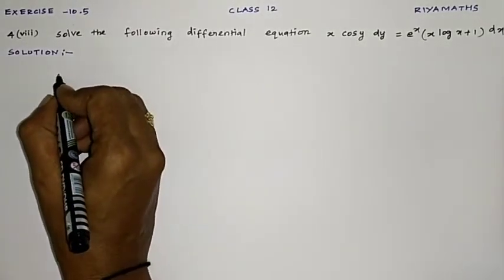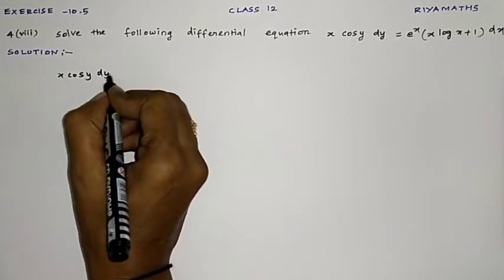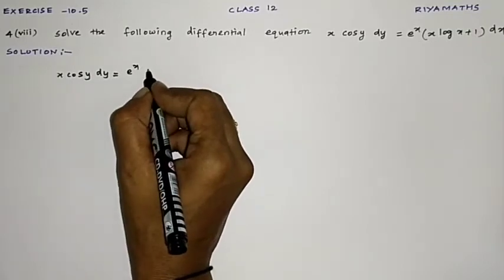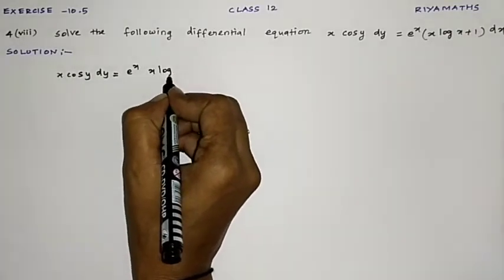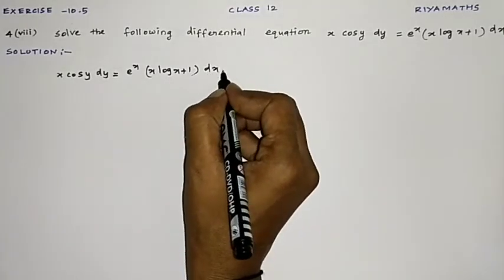Solution: x cos y dy = e^x (x log x + 1) dx.